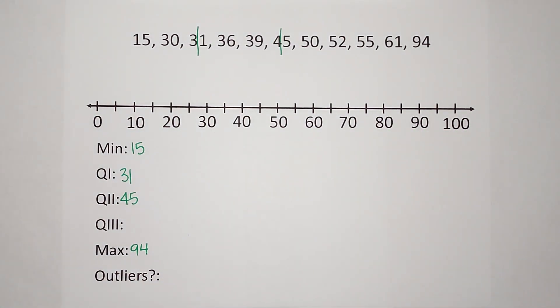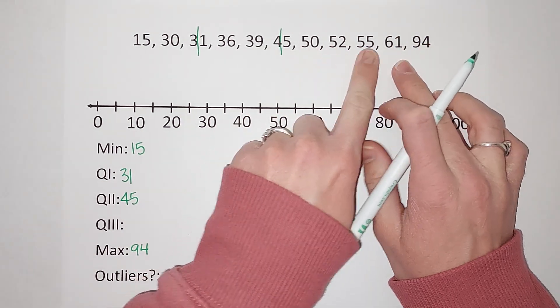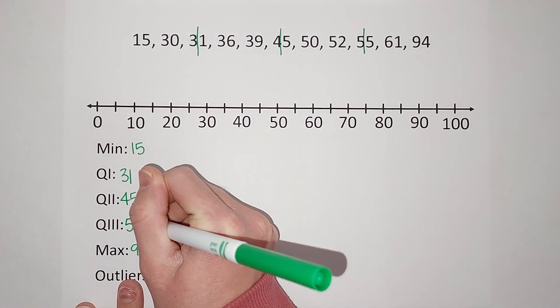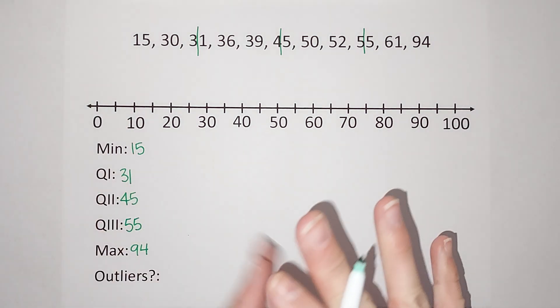Then quartile 3, we're going to find the middle of this side, so it is 55. If I were just doing a box and whisker, I would just plot it now. I have the five pieces of information, but we're doing a modified box plot, so we are looking for outliers.